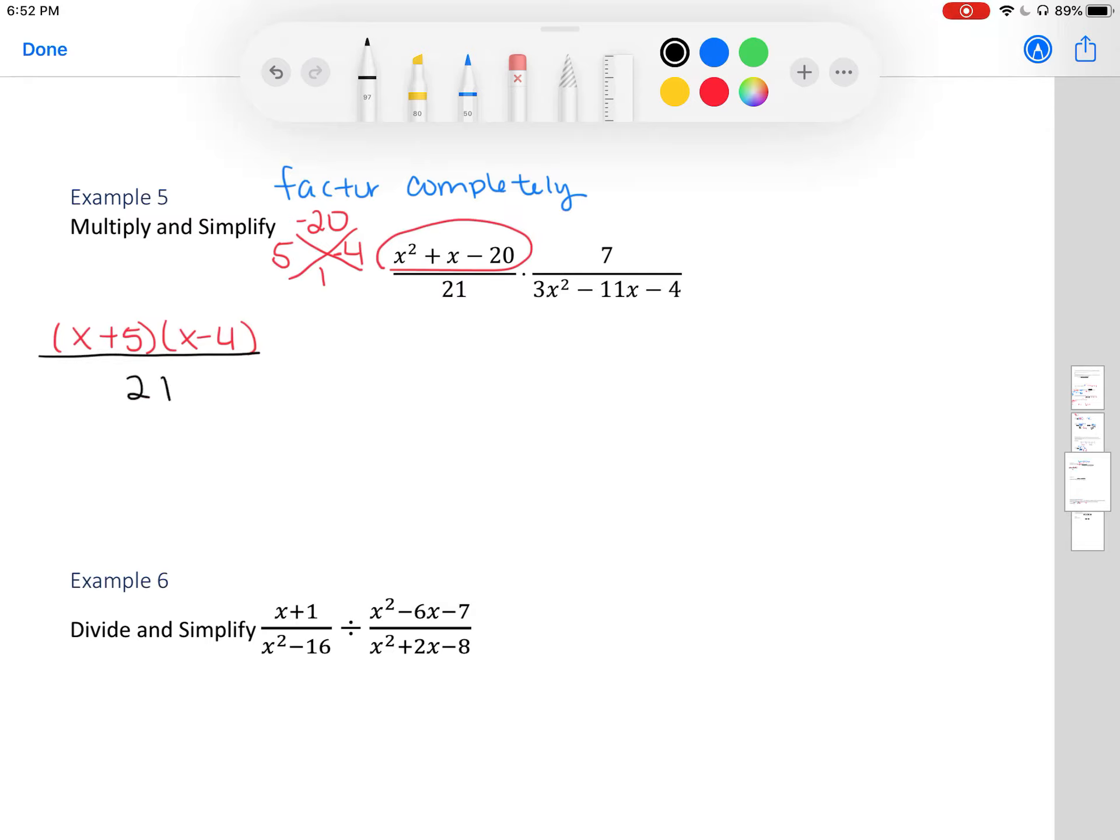Here I have 21 in the denominator. Looking for factors, 3 times negative 4 is negative 12. So this factors to be 3x times x minus 4, and in the second fraction the numerator is 3x squared minus 12x minus something. Working through the factoring with a placeholder of 1.